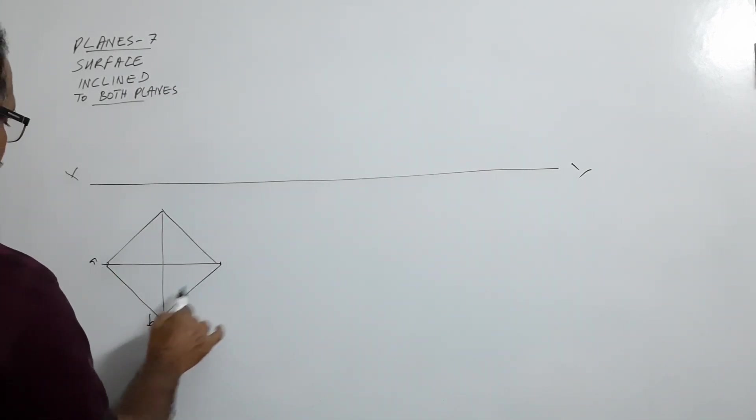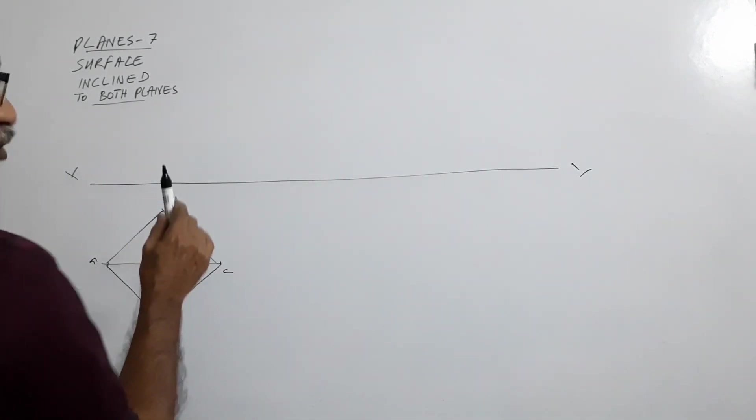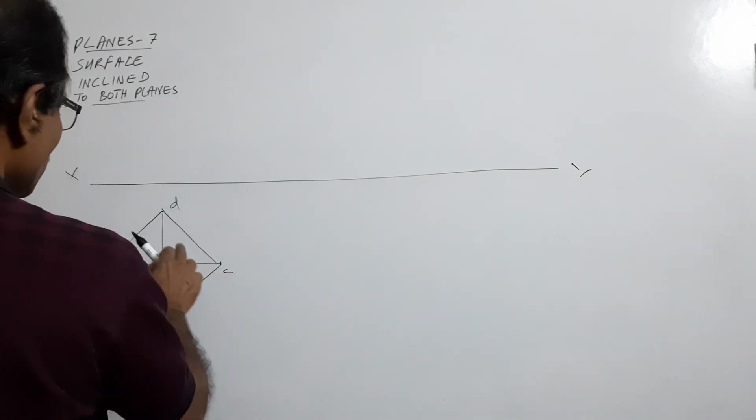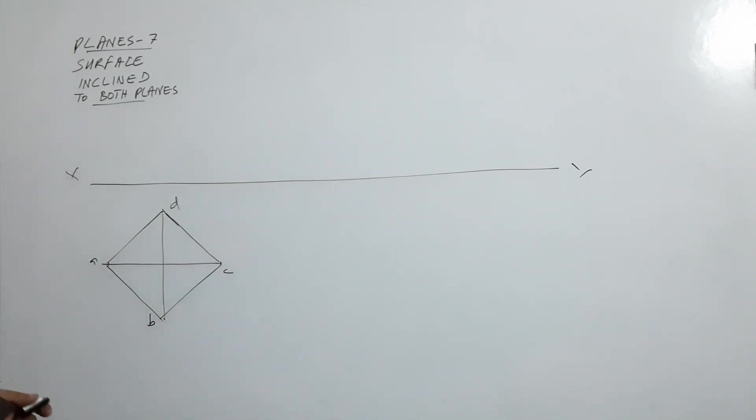Connect A, B, C, D - square with 70 diagonals, agree? My square is not good. Assume because I am not following dimensions. Assume it is good, there is no option.